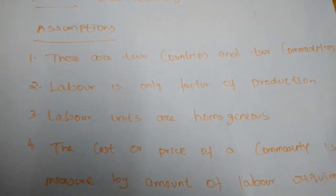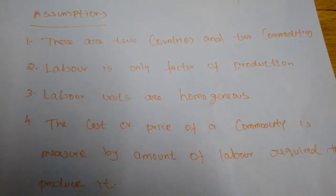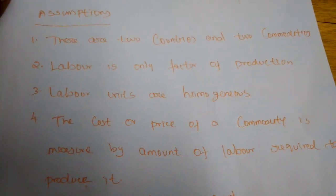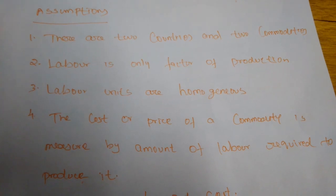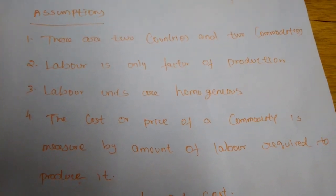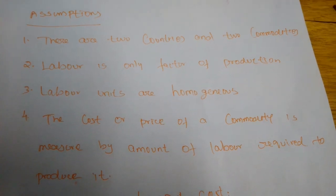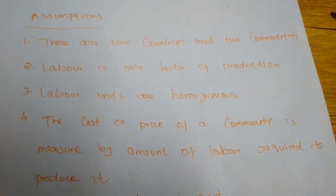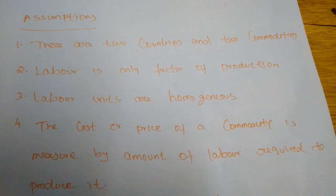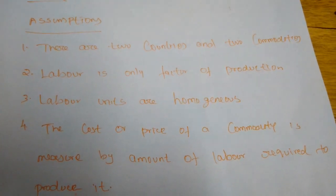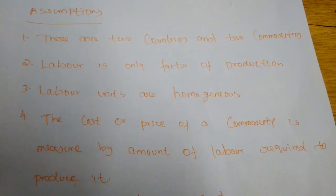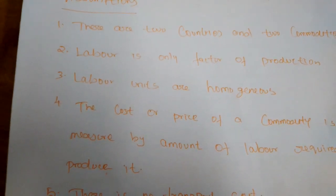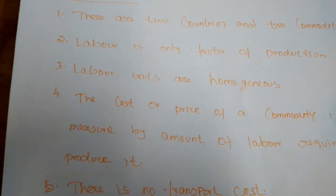For example, if India can produce wheat at one rupee and America can produce the same wheat at two rupees, but in contrast, if India needs two rupees to produce cloth and America can produce one unit of cloth at one rupee, then India and America will enter into international trade dealings — each producing at an absolute cost advantage over the other.